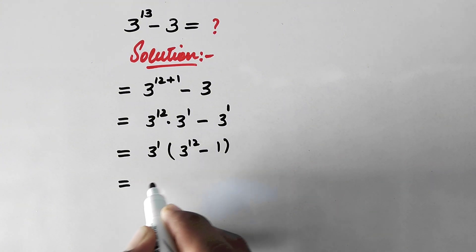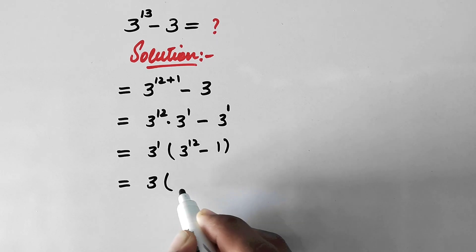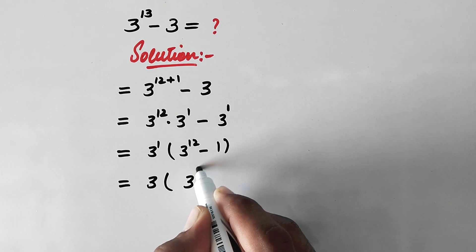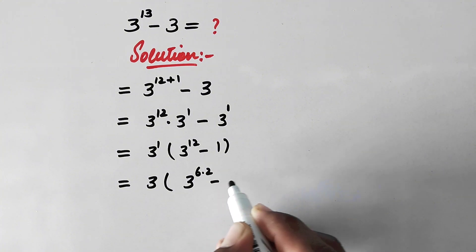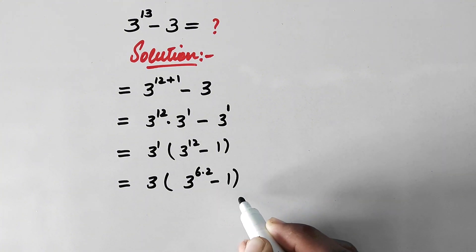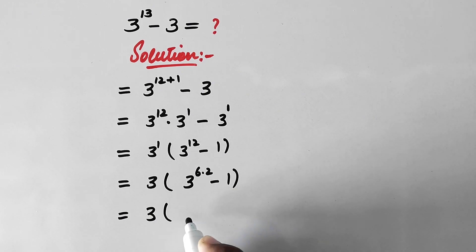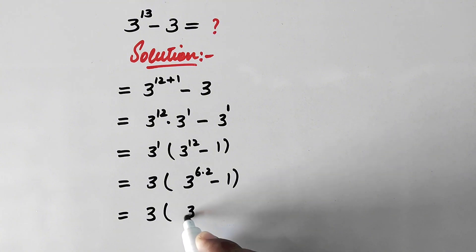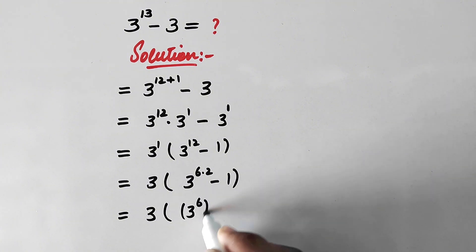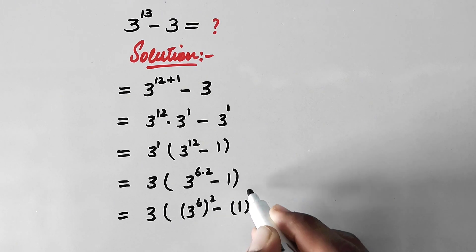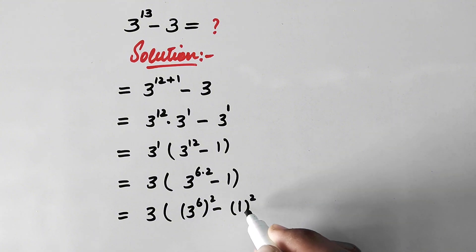In the next step, we write 3 to the power 1 simply as 3. Inside the bracket we rewrite 3 to the power 12 as 3 to the power 6, quantity squared, giving us 3 into (3 to the power 6) squared minus 1 squared.